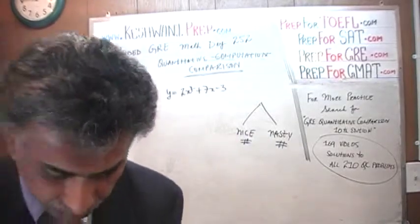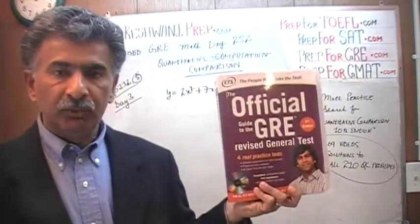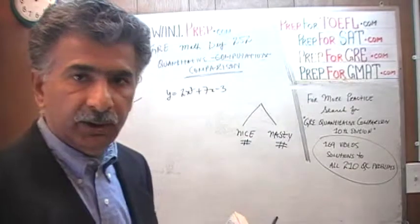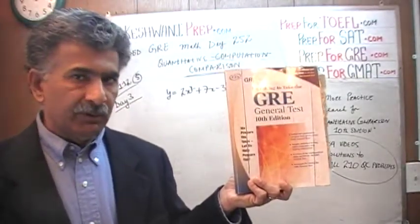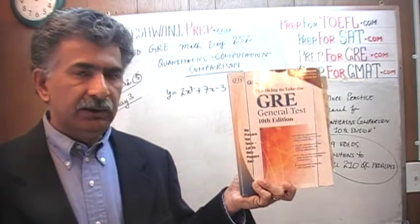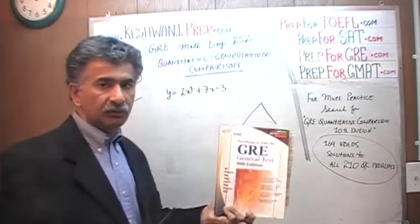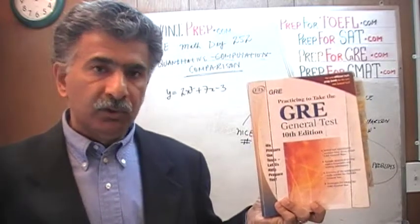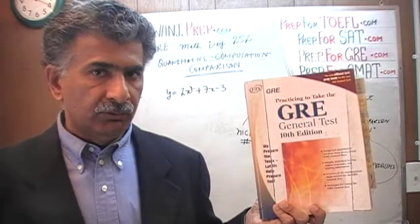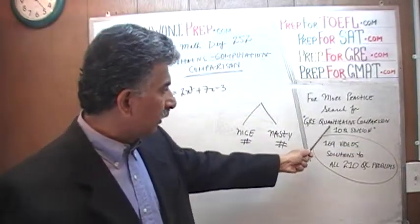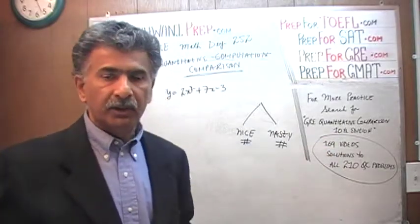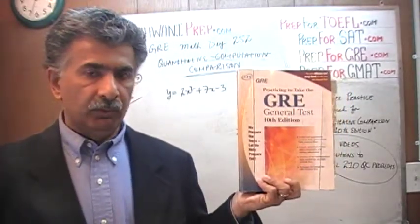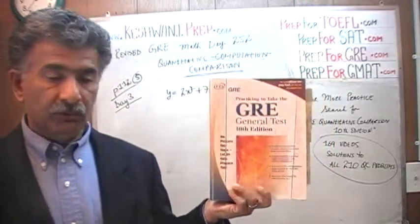There aren't too many quantitative comparison questions in this book to practice on, unfortunately. But in the older book, the 10th edition — the old GRE — this book I am holding contains seven GREs, and each exam has 30 quantitative comparison questions. That is 210 questions in this one book. You will find solutions to all 210 quantitative comparison questions on my channel — just search for GRE quantitative comparison 10th edition and they will pop right up. Even if you can't find the old book, you can still watch the videos and get something out of it, because I put the questions on the blackboard.